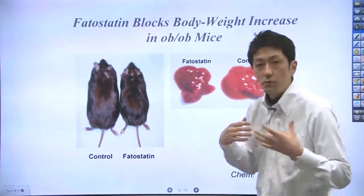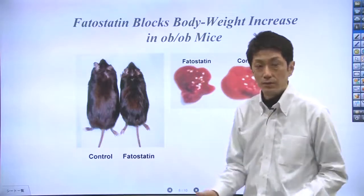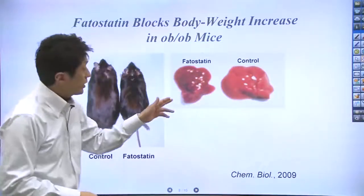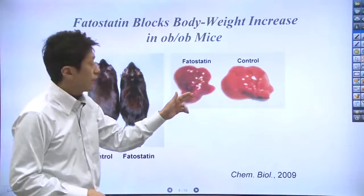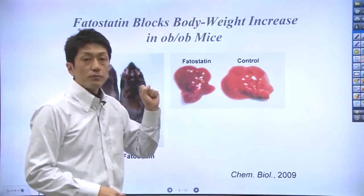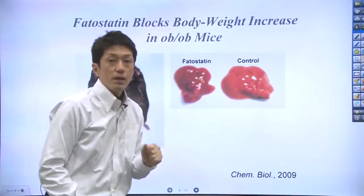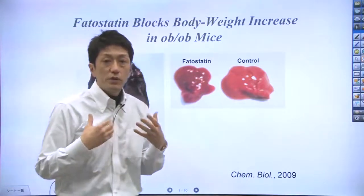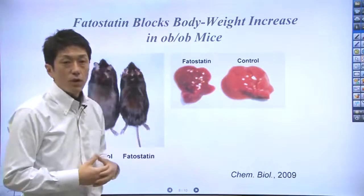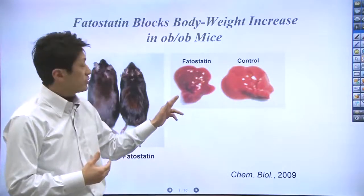Being obese, these mice also had fatty liver. What you are looking at here is the fatty liver from obese mice. If you eat too much, you get such a liver. Fatty livers were also prevented by the fatostatin injection.